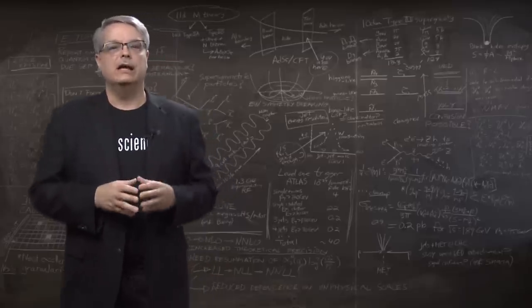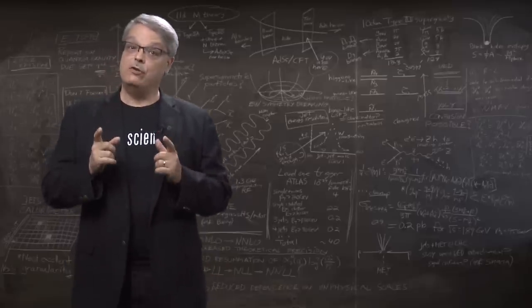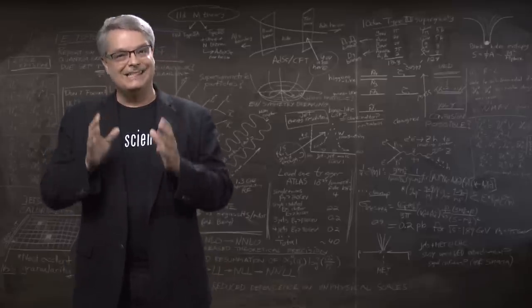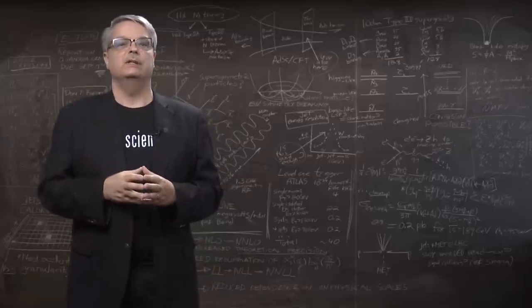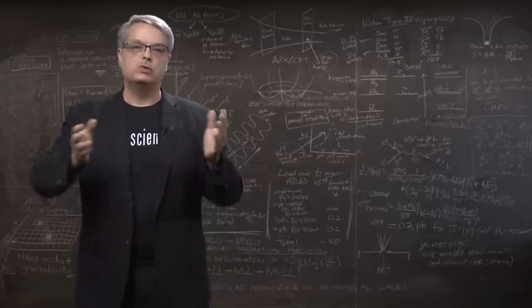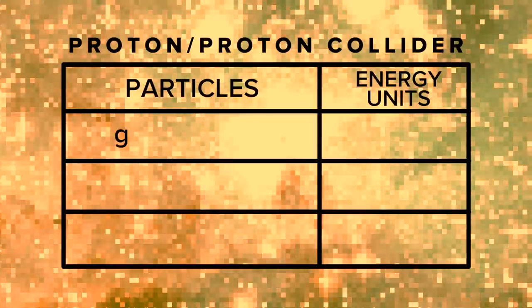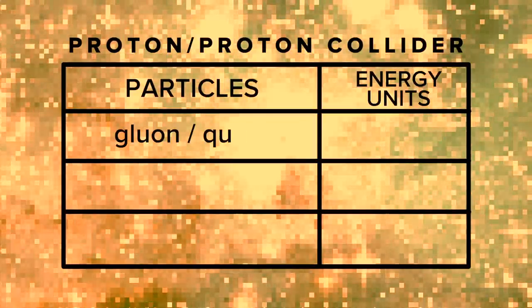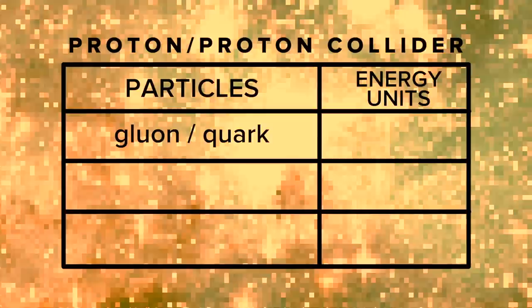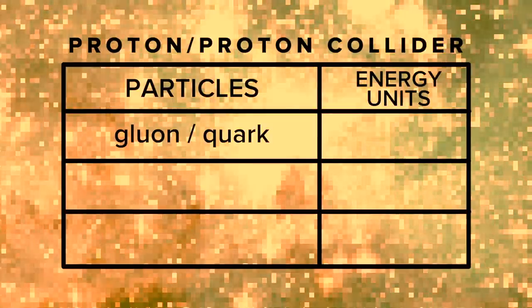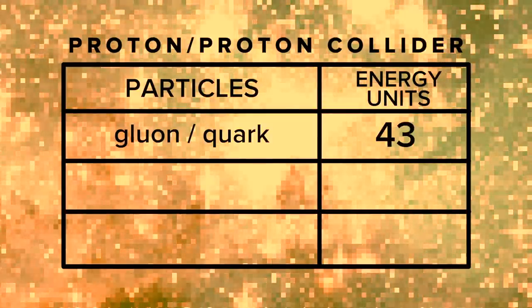That all might sound kind of confusing, so let's hang some numbers on it to help make it clearer. Suppose you repeatedly collide pairs of protons head-on, and further, each proton has exactly 100 units of energy. Given that, what sort of collisions can you expect? Well, the first collision might involve a gluon with 3 units of energy from one proton colliding with a quark with 40 units of energy. This collision has a combined energy of 43 units.